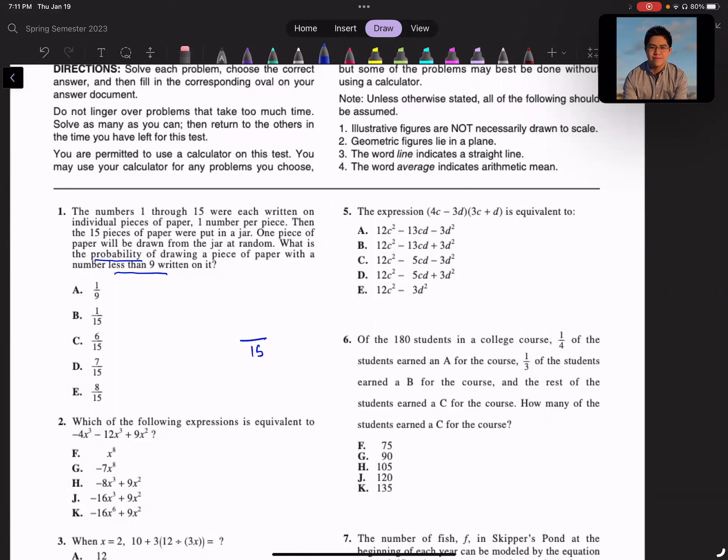So the key points here: a number less than 9, so not including 9. And we want to find the probability. From the information, we know there's 15 numbers because there's one per piece. So for probability, we have it over 15. The numbers that are less than 9 would be 1 through 8, so that would be 8 numbers. So we're looking for 8 over 15. Does that make sense? That's a little more than half. E is the right answer, and I can move on.